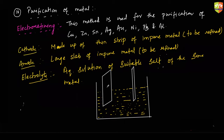This is the arrangement we have. The electrolyte is here, and this is the large slab. The cathode and anode are both made up of the same metal — the metal which is to be refined.